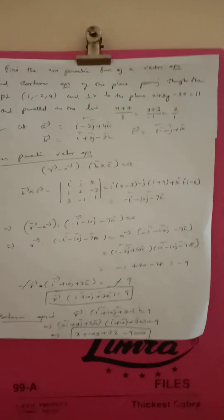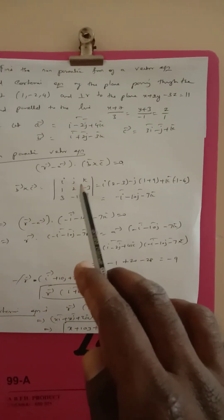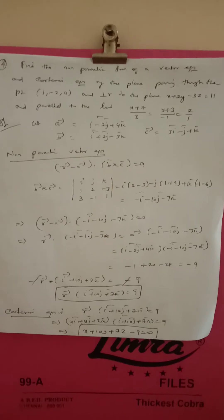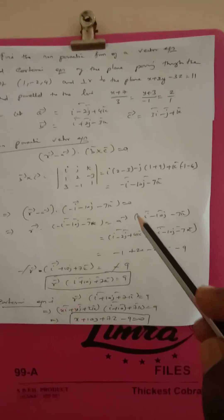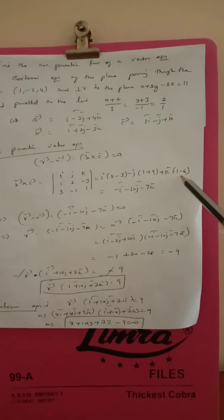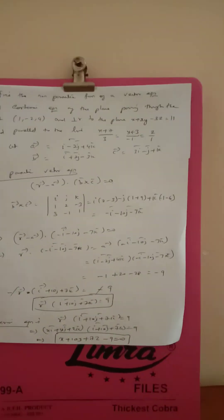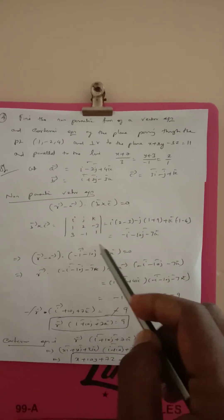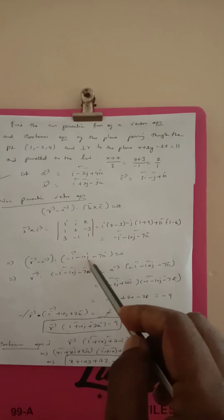The non-parametric vector equation is r vector minus a vector dot (b cross c) equal to 0. We calculate b cross c as the determinant of ijk with b equal to i plus 2j minus 3k and c equal to 3i minus j plus k. The result of b cross c is minus i minus 10j minus 7k.